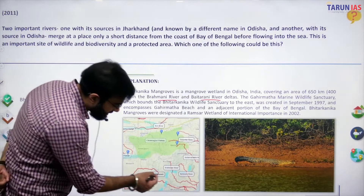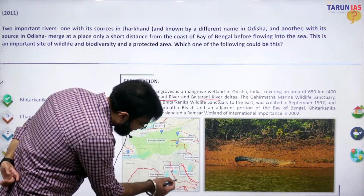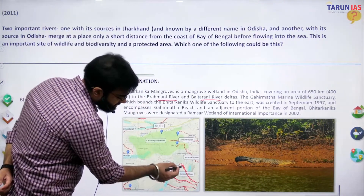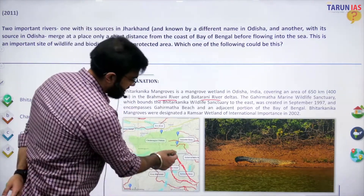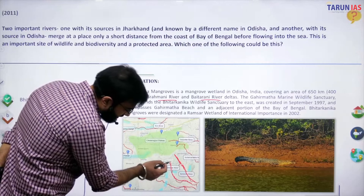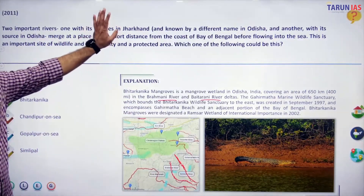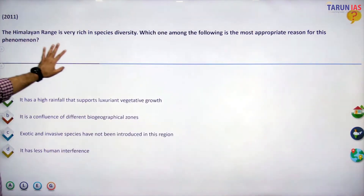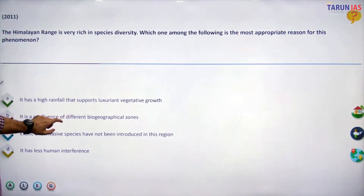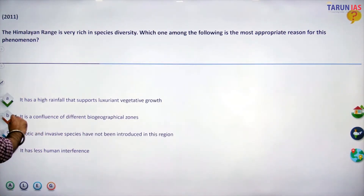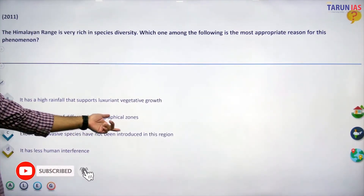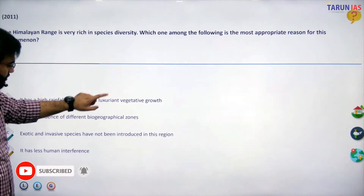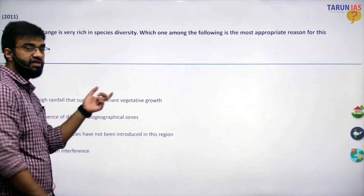From the map, we can see the Bhitarkanika river and the Brahmani river. The Bhitarkanika river originates from the south from the Subarnarekha river coming from Jharkhand, while the Brahmani river originates from Odisha itself. This region is very rich in species. It is a confluence of different biogeographical zones, though these are features or characteristics of the region, not the reasons for its species diversity.